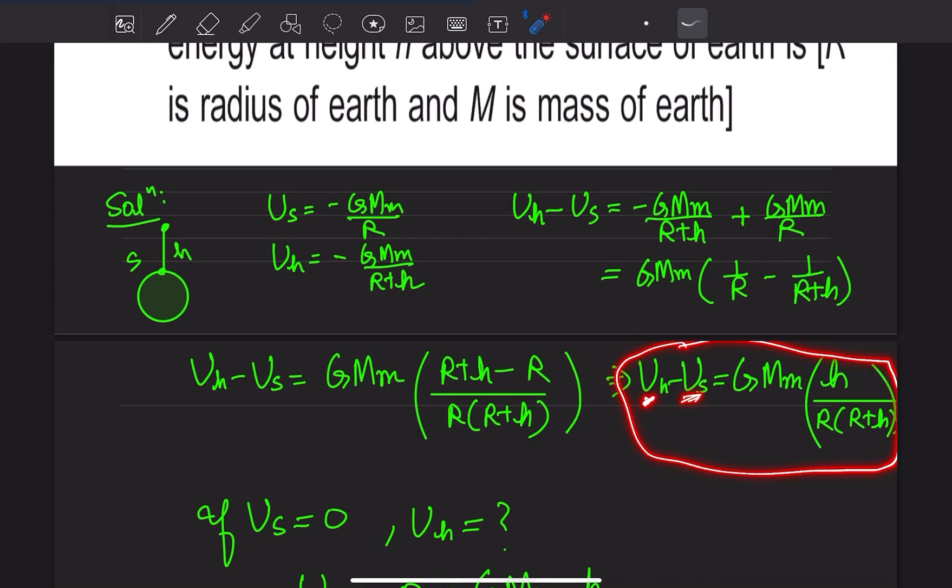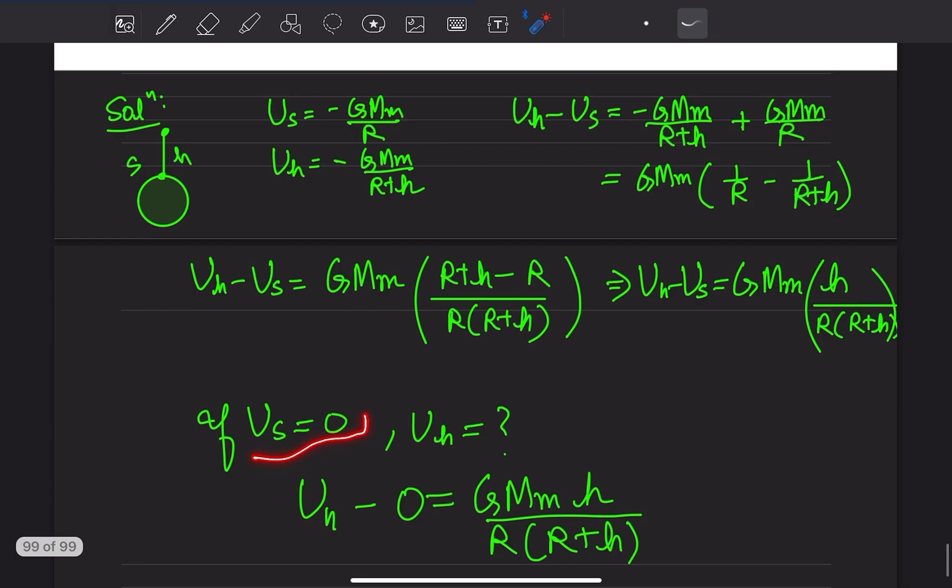Height पे और surface पे वो हमेशा यही रहने वाला है, difference हमेशा यही रहेगा. Question पूछ रहा, अगर surface पे energy zero हो जाए, तो h पे कितनी होगी?